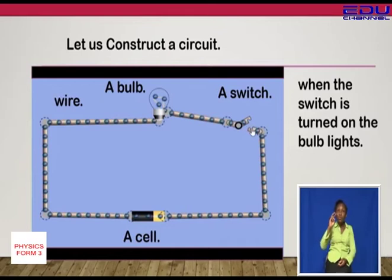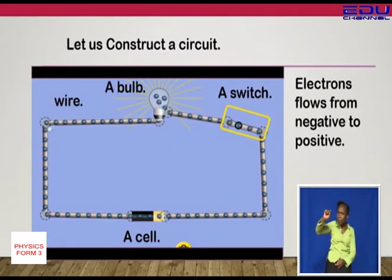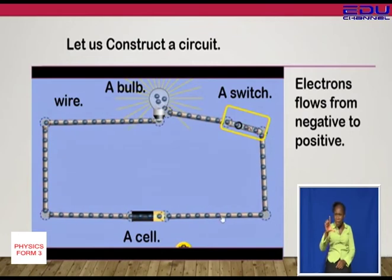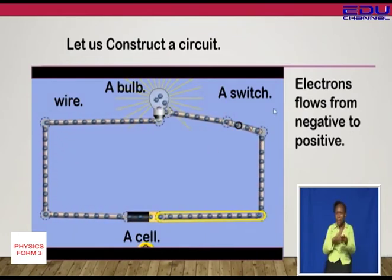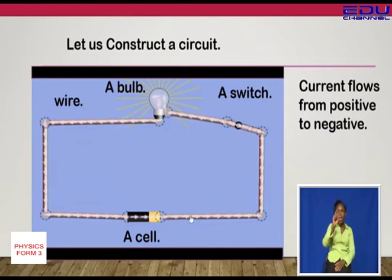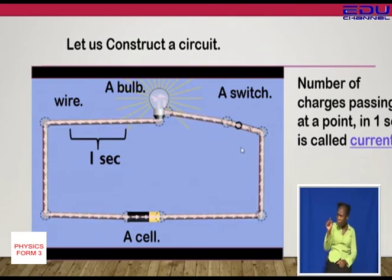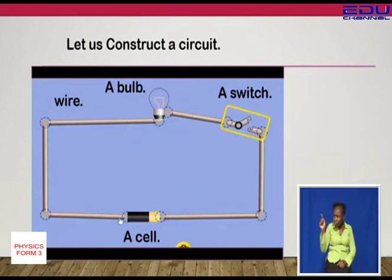You can see a representation of what are called electrons. When the circuit is on, you can see the flow of electrons. Electrons flow from negative to positive, because the negative terminal has more electrons, so they move from the negative terminal to the positive terminal. Current flows in the opposite direction — we call it conventional current. So as electrons move from negative to positive, current moves from positive to negative. You can see there are six charges passing a point in one second, so the current in that circuit is six amperes.